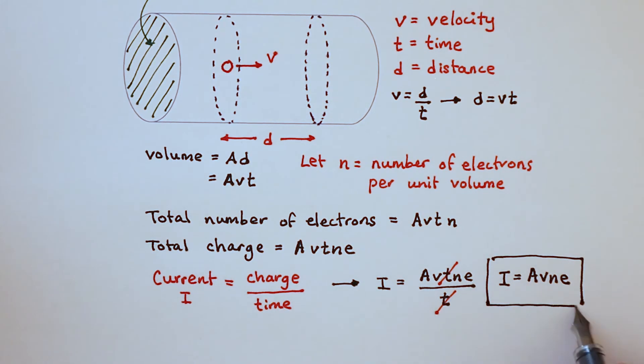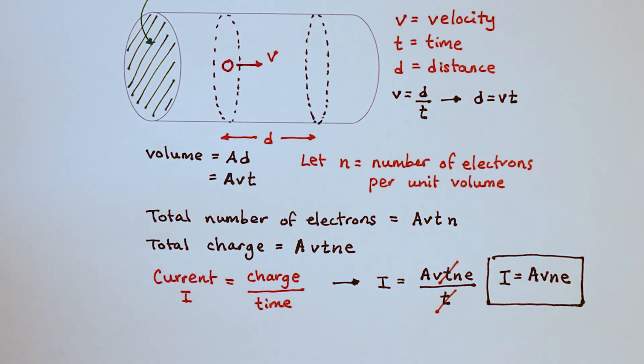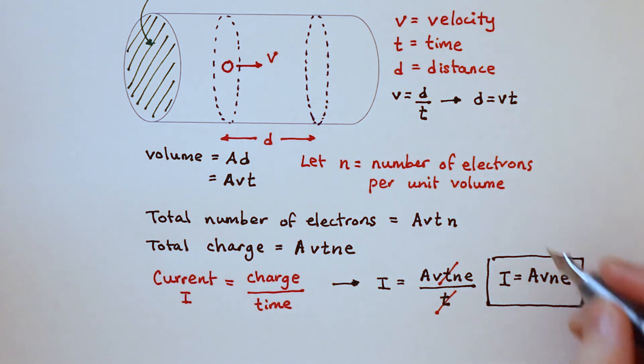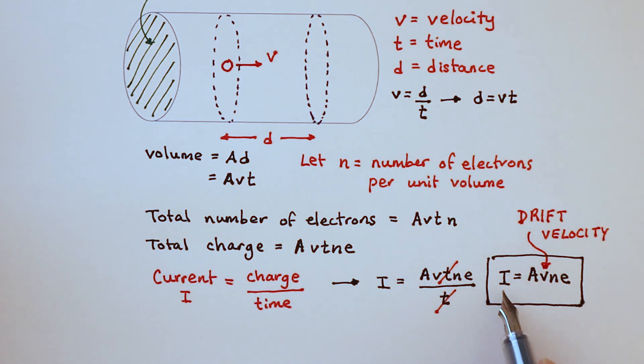So current is equal to the cross-sectional area times the drift velocity times the number of electrons per unit volume times the charge on one electron. This equation shows us that the larger the drift velocity of the electrons, the larger the current is.